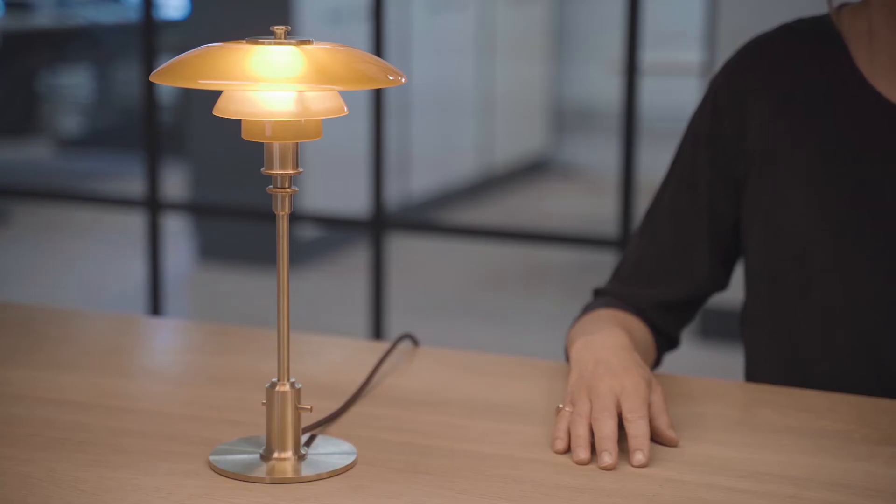The PH 2-1 table lamp was originally designed in 1927, just one year after Paul Henningsen and Louis Poulsen launched the three-shade system.